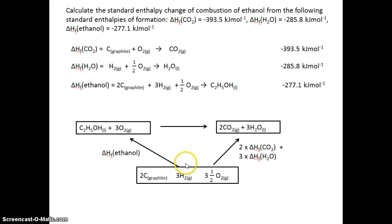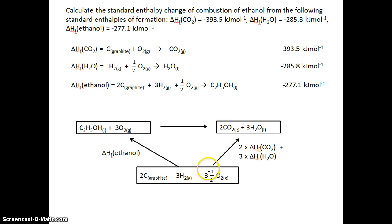The next step is to work out what these arrows actually represent in terms of the data you've been given. The arrow on the left represents the enthalpy change of formation of ethanol, and the arrow on the right will represent two lots of forming a mole of carbon dioxide gas, and three lots of forming a mole of water liquid. Notice water is in the liquid state because the enthalpy change of combustion is under standard conditions, and under standard conditions water is a liquid.